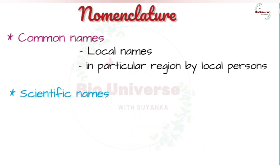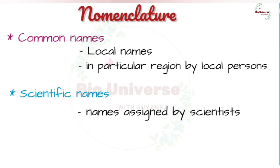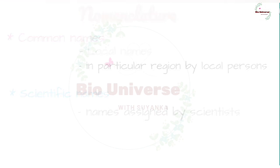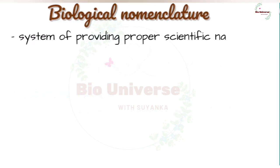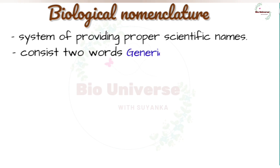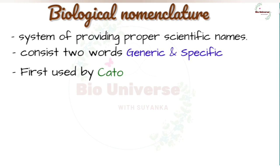Scientific names are specific and distinguishing names assigned to organisms by scientists so as to remove ambiguity and make the names universally understood by other biologists. Binomial nomenclature is a system of providing distinct and proper scientific names to organisms, each consisting of two words — first generic and second specific. Though two-word names were first used by Cato, they were not based on any scientific system.